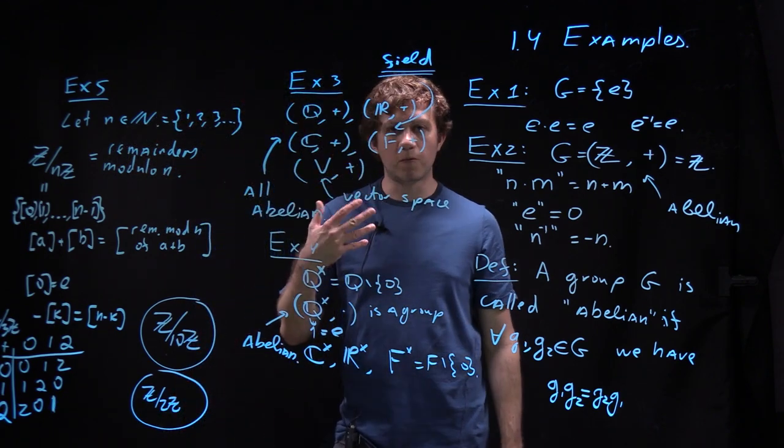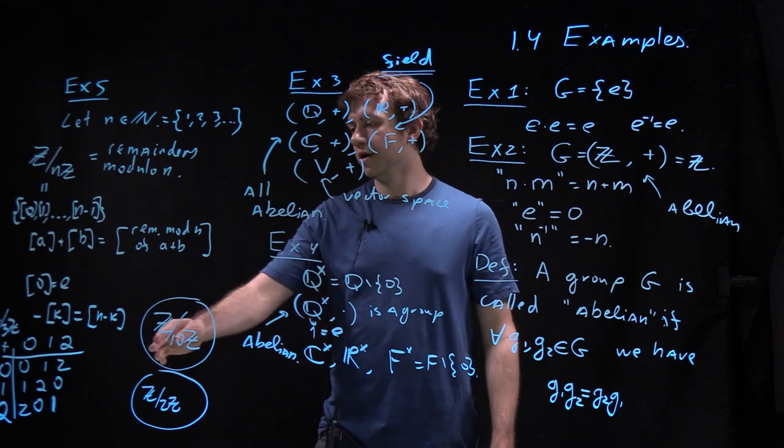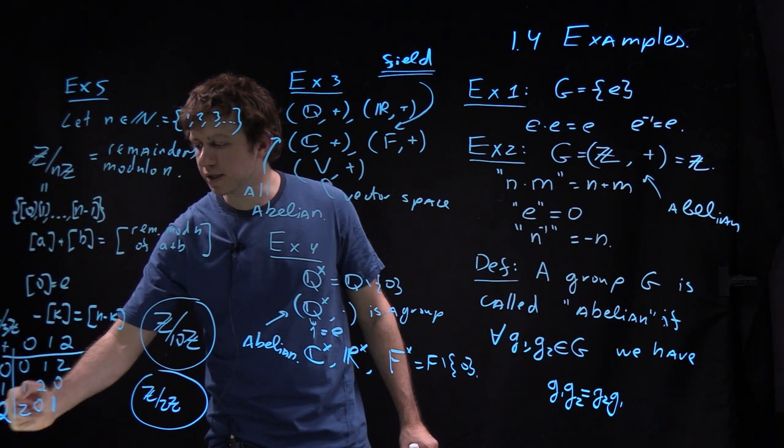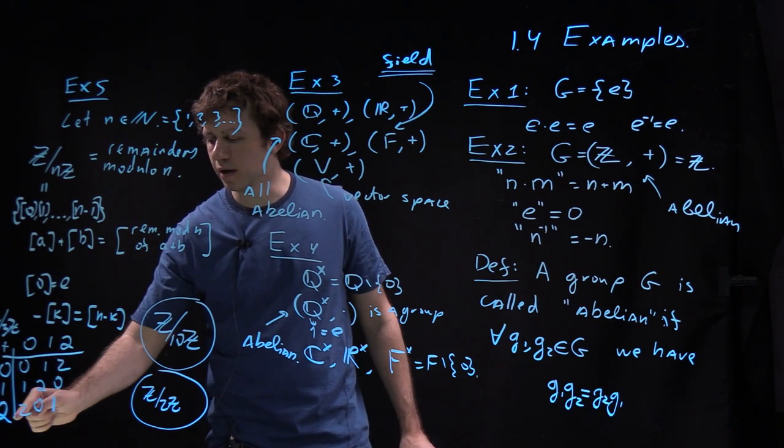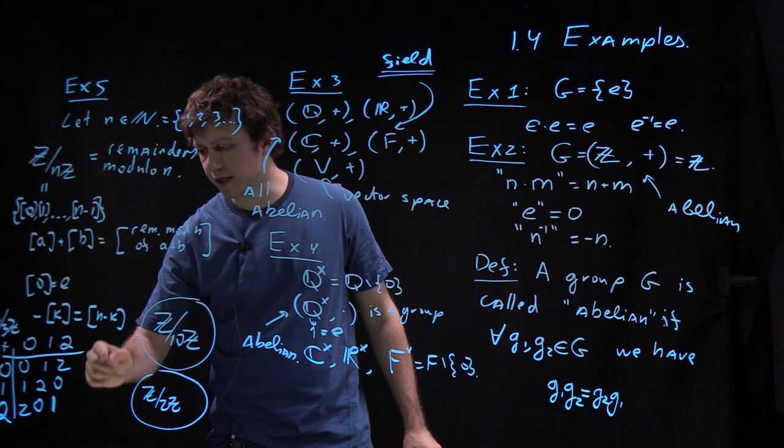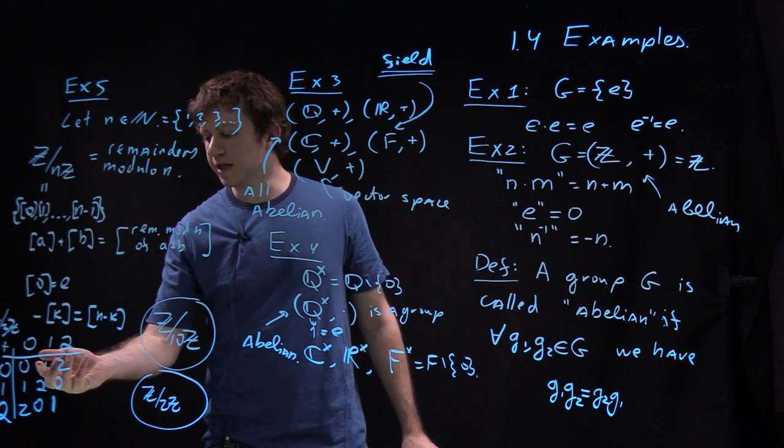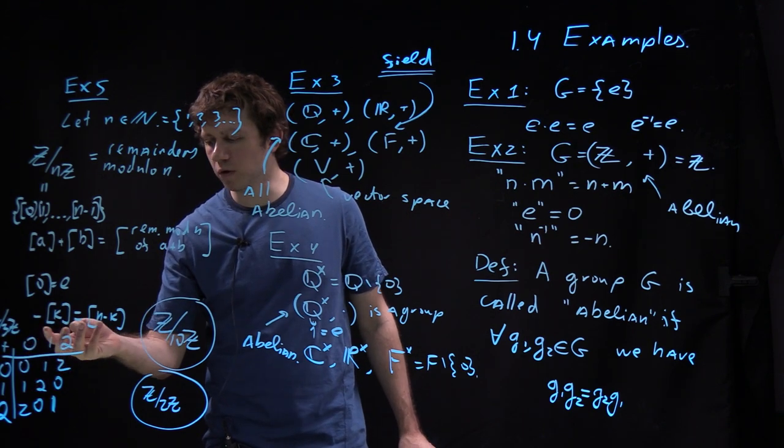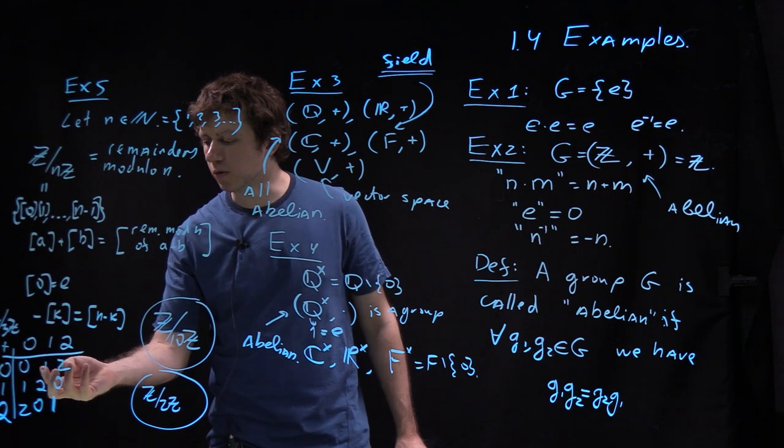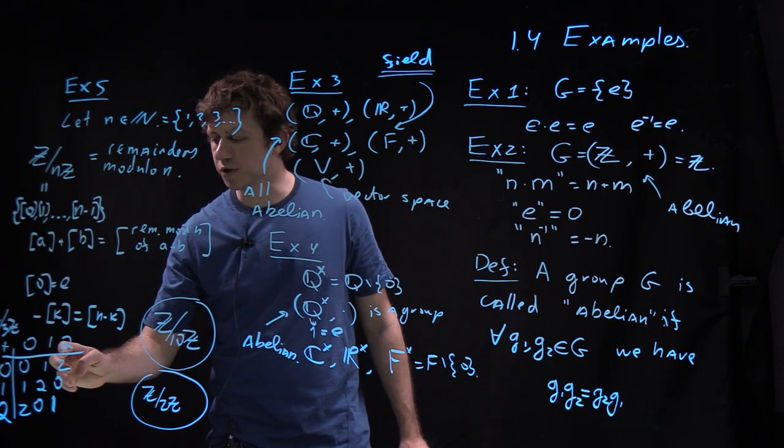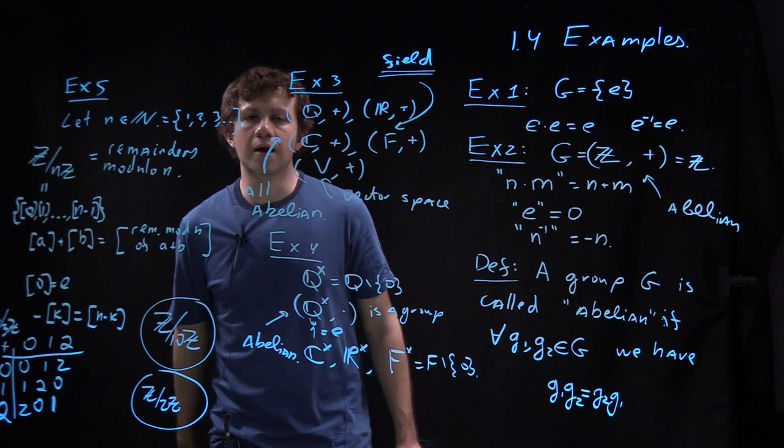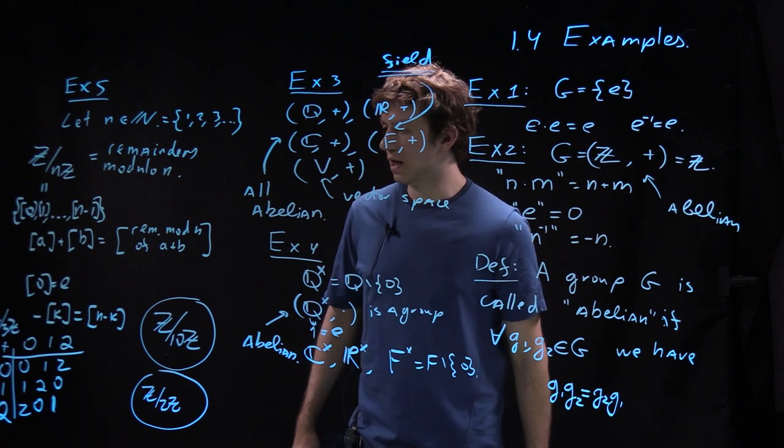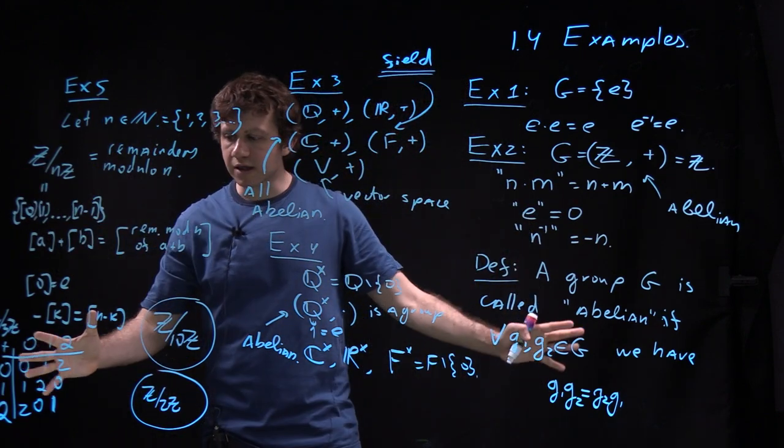And by the way, one of homework problems is about multiplication tables. So multiplication table is a table where you write down n elements in a group here and there and just multiply them in each term of your multiplication table. And one of the properties of multiplication table is that in every row and in every column you will see just all elements of the group in some different order. 0, 1, 2, 1, 2, 0, 2, 0, 1. And this is something which you'll have to prove in your homework.